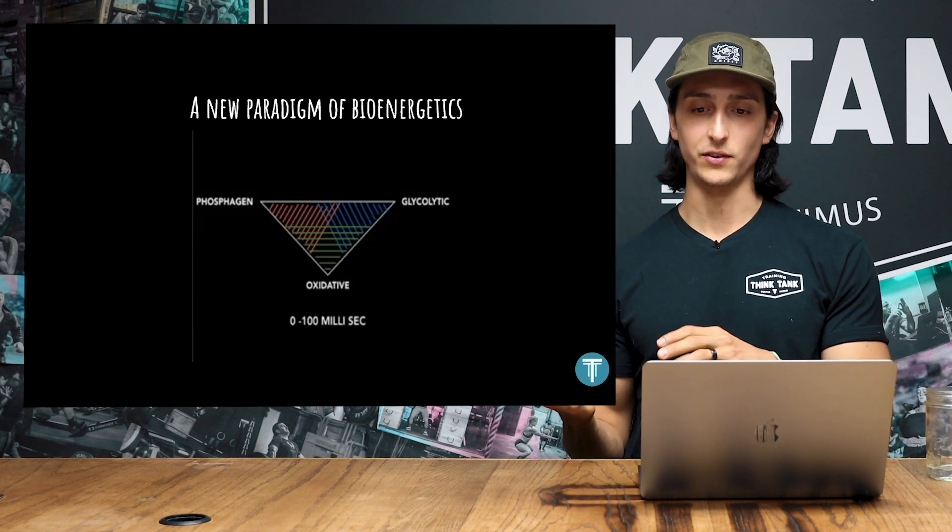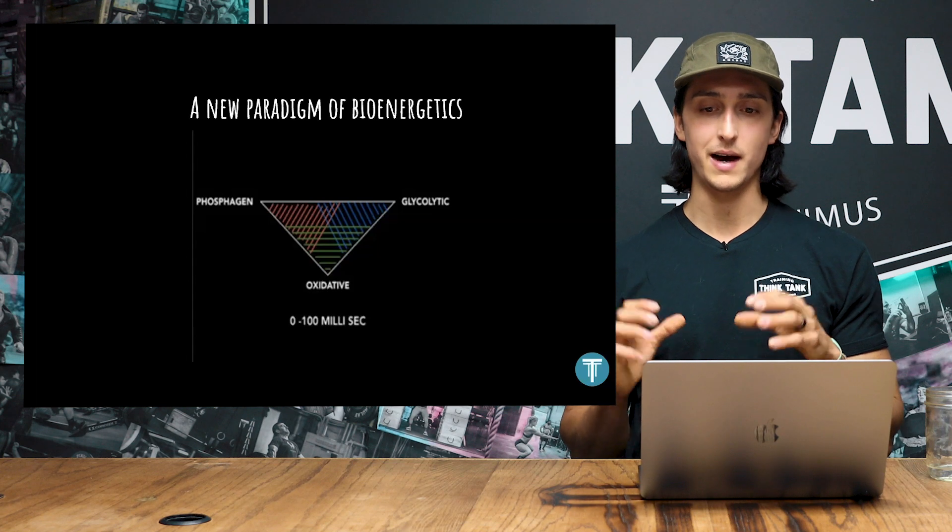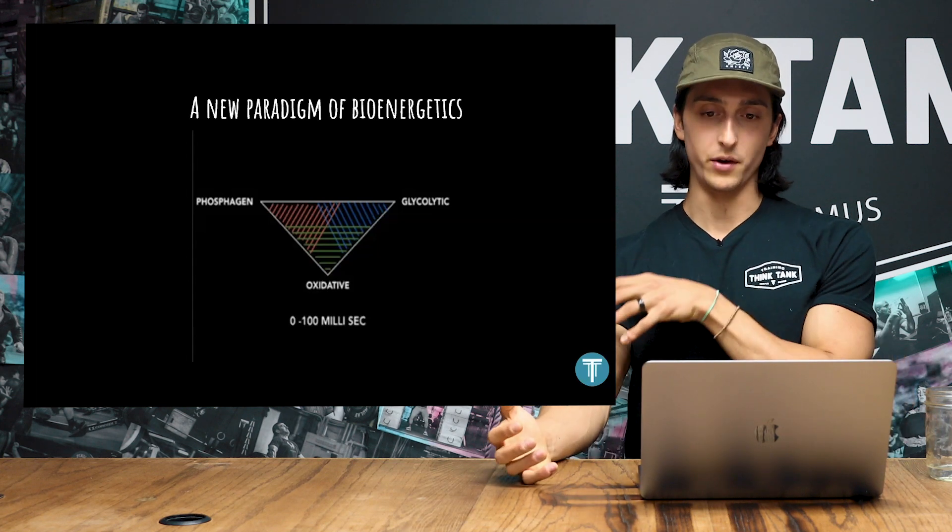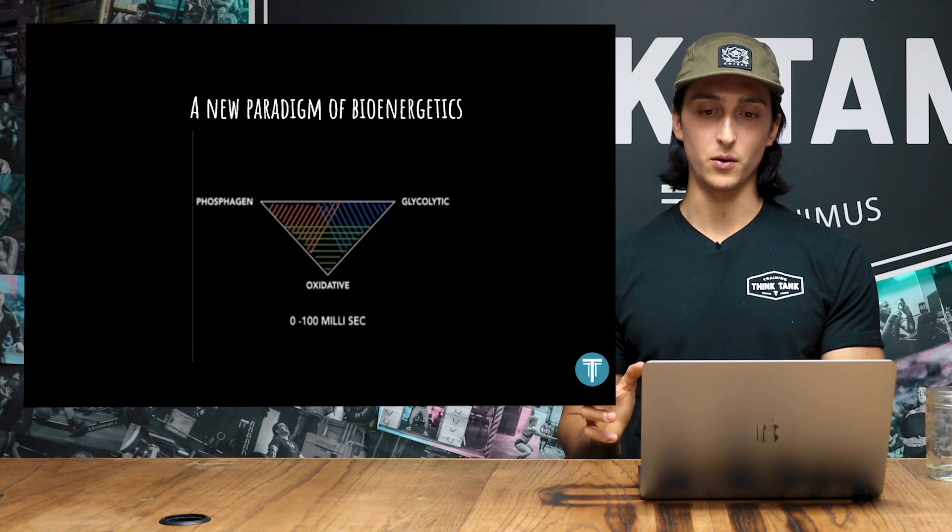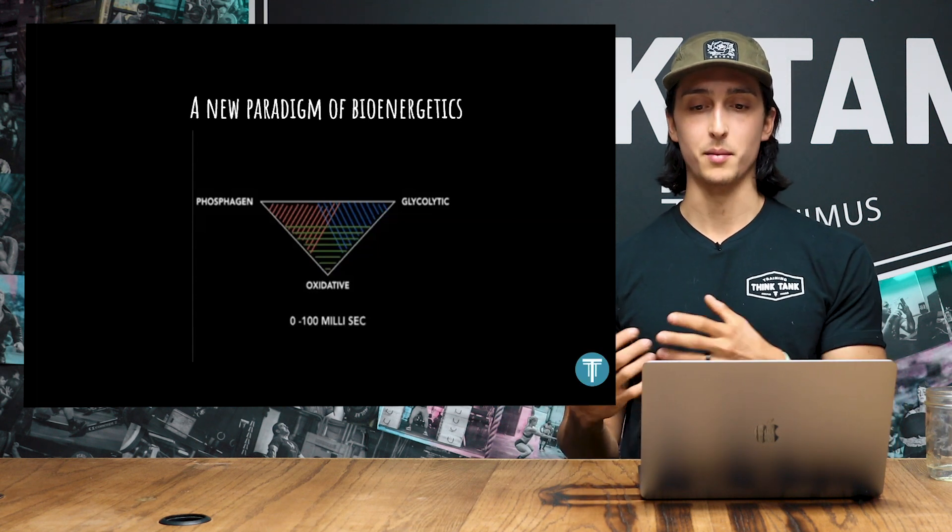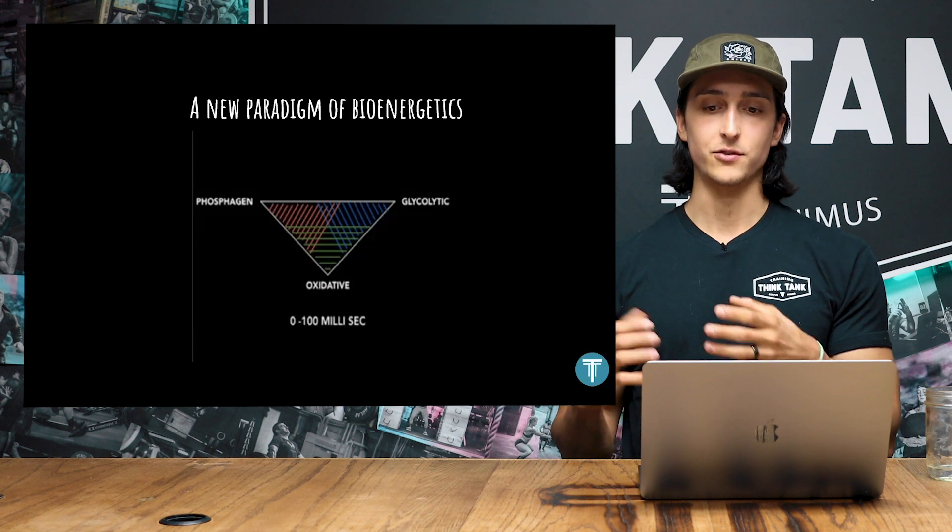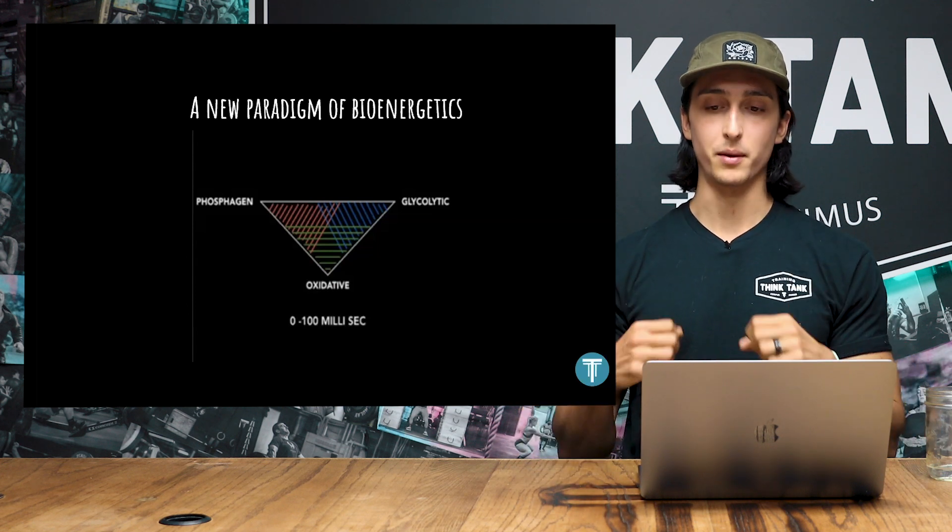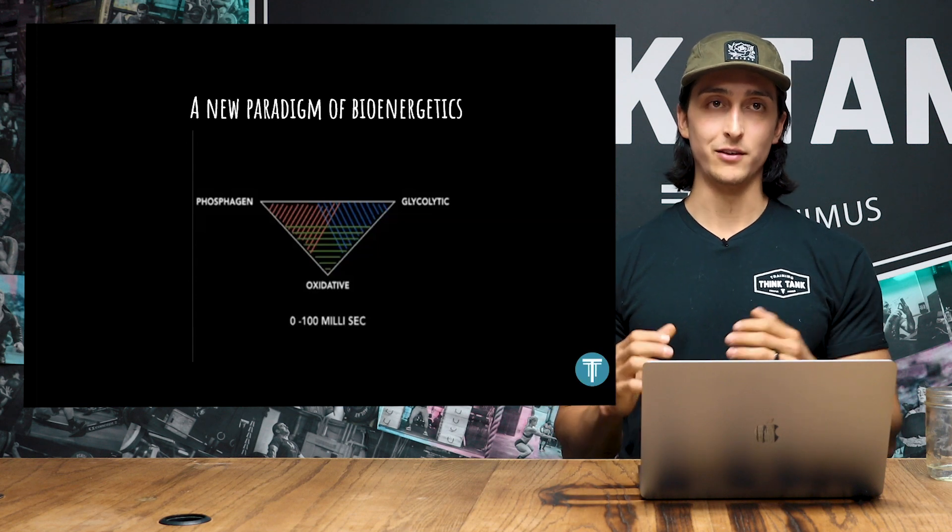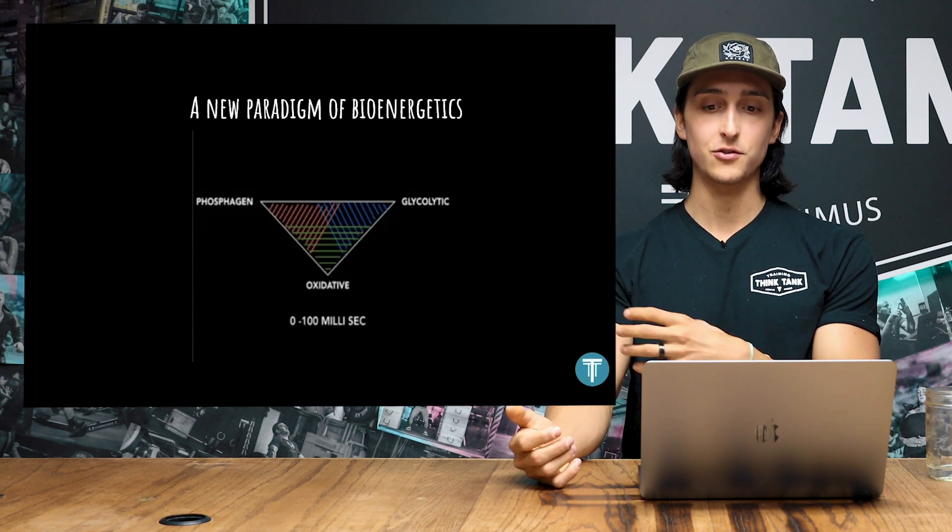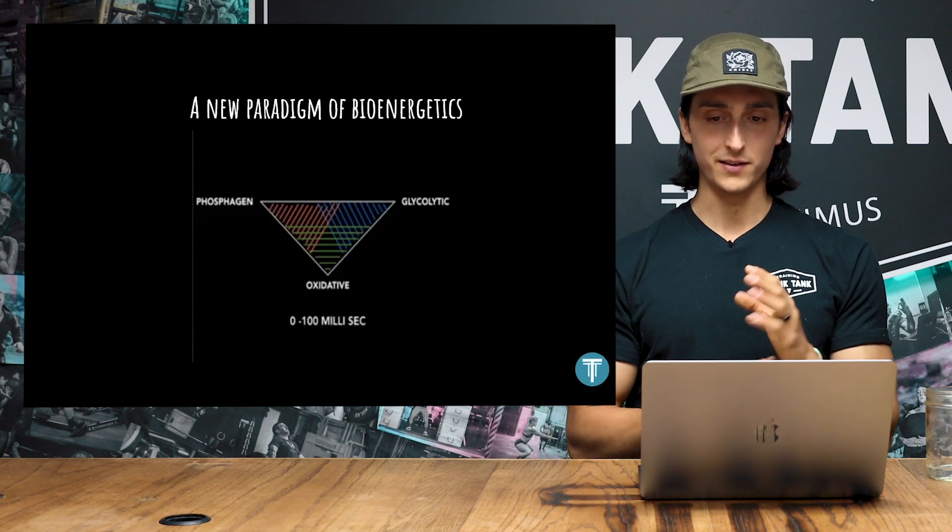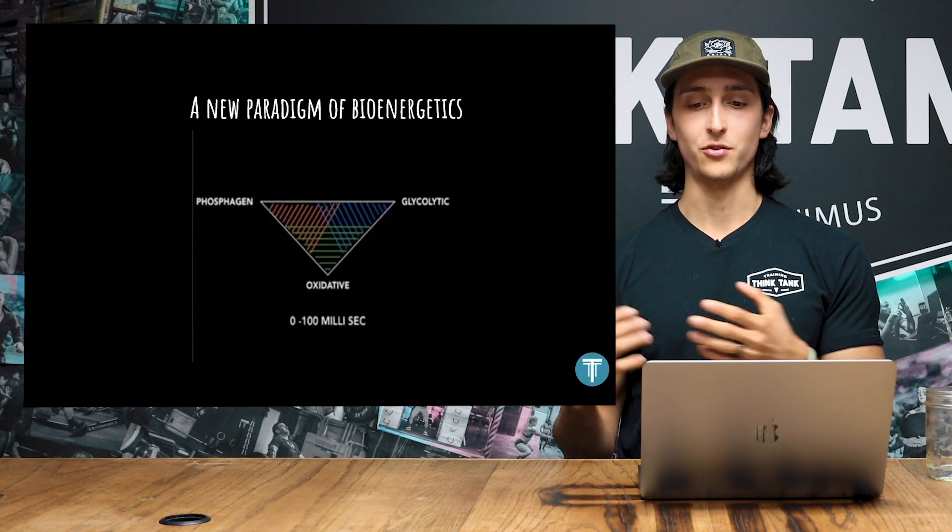But what happens next is where things start to get kind of interesting and break that old model. In order to sustain those contractions, we need a non-oxidative energy supply. But the issue is that the amount of glucose that we actually store in a muscle is really limited. So one of the things that we see in the biochemical evidence is that glycogen phosphorylase, which breaks apart muscle glycogen, could really rapidly increase its activity. And as a result, we could break down muscle glycogen to restore phosphocreatine to sustain contractions.